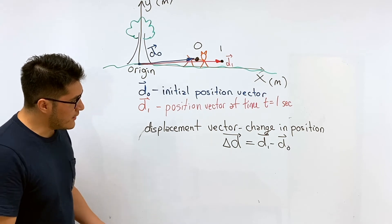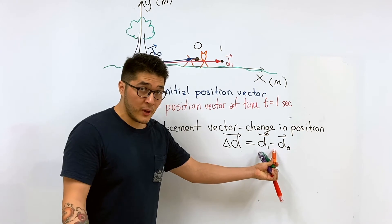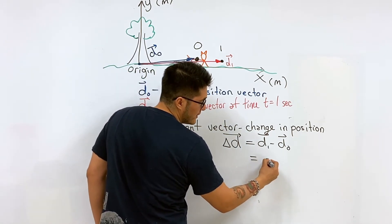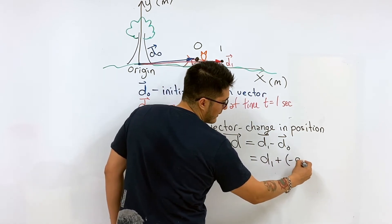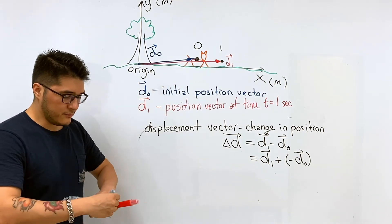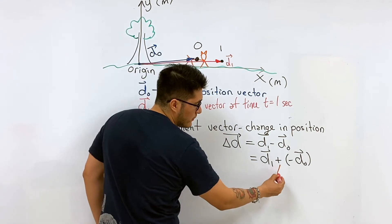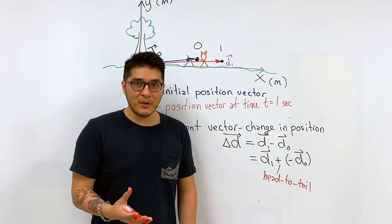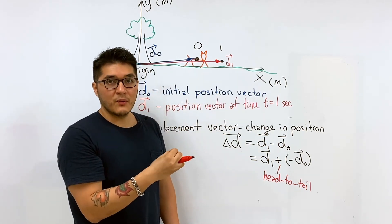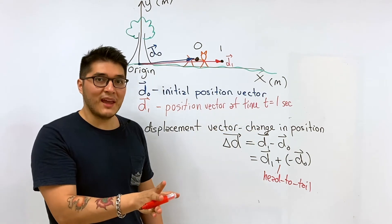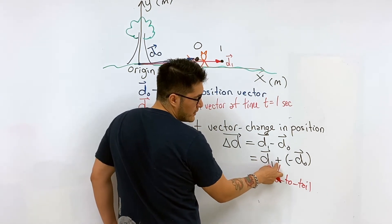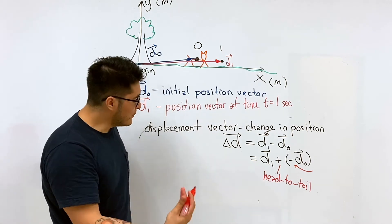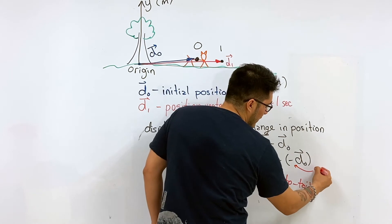Now we have to compute this as a vector subtraction, not a regular subtraction, because these are vector quantities. One way to handle this is to rewrite it as addition: d₁ plus negative d-initial. To add vectors together we use the head-to-tail method. You take the head of the first vector and attach it to the tail of the second vector. The negative sign here is a scalar multiplication — a less fancy way of thinking about it is that it means the opposite direction.